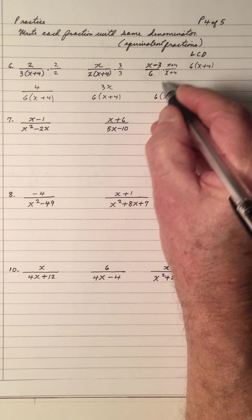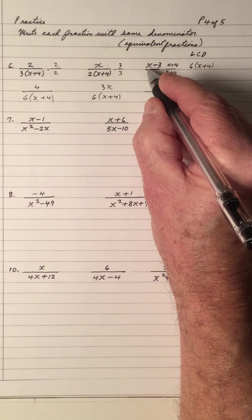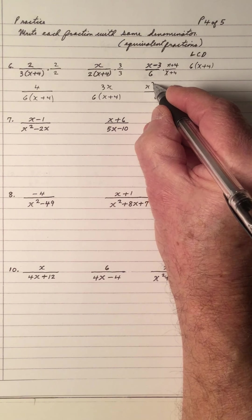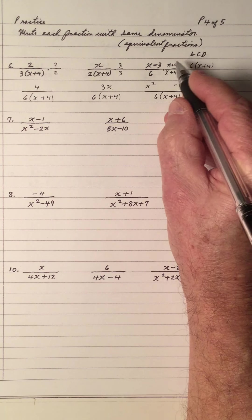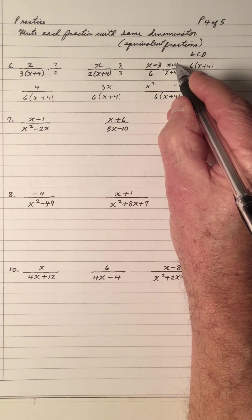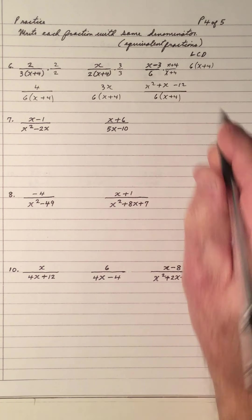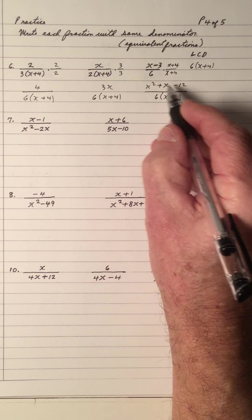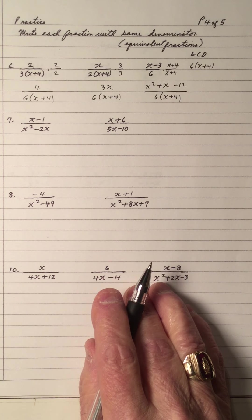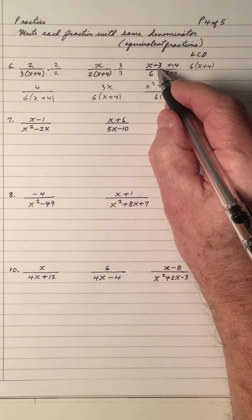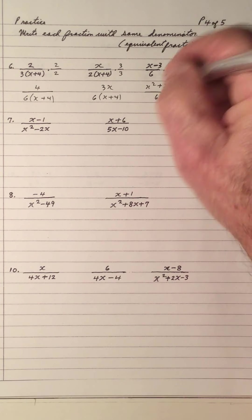So I got to do foil on this. Notice 4 and 3 are different, so I won't get 0 in the middle. x times x is x squared; negative 3 times positive 4 is minus 12; outside is 4x; inside is negative 3x — so it's a plus x. If you don't like this style, multiply it out on a sheet of scrap paper and then put the answer in. Rather than writing down a lot of steps, that's another way to save time.